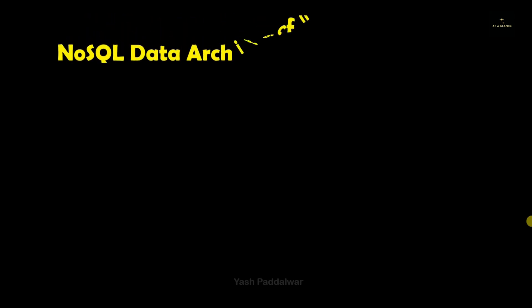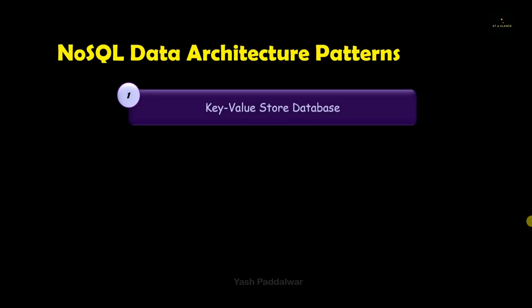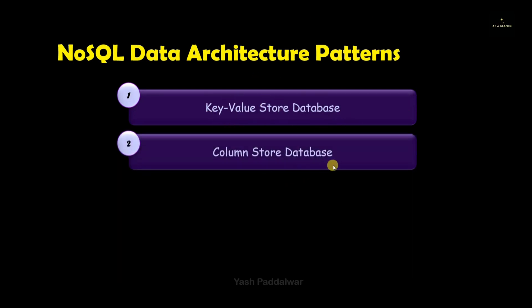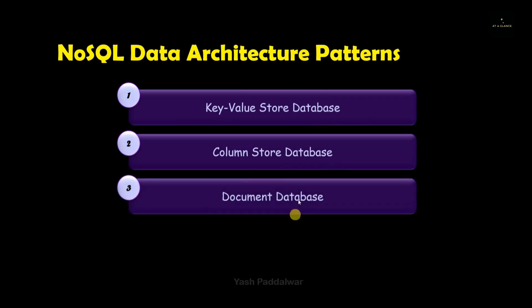Hello everyone, welcome back to my YouTube channel. In the previous video, we have seen NoSQL introduction and we also have seen the CAP theorem. Now it's time to look into the different types of NoSQL databases, that is nothing but NoSQL data architecture patterns. In total there are four NoSQL data architecture patterns.